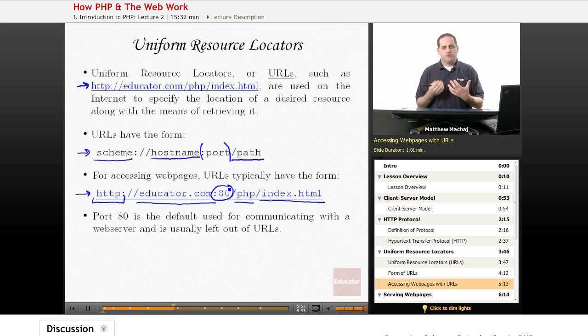Now, port 80 is the default used for communicating with web servers. And it's typically left out of URLs. And actually, pretty much any time you browse anything on the web, you never see it. But behind the scenes, it's implicitly being used. And that's how your web browser communicates with the web server to be able to use HTTP to download a web page to your browser.